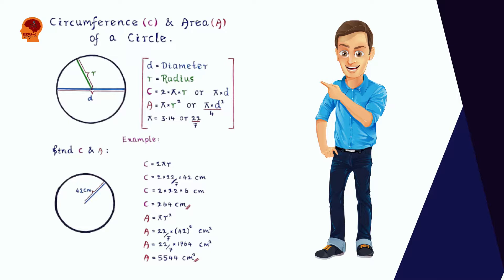Let's calculate the circumference of a circle with a radius of 42 centimeters. The circumference = 2 × π × r = 2 × (22/7) × 42. Since 42 ÷ 7 = 6, we get 2 × 22 × 6 = 264 centimeters as the circumference.